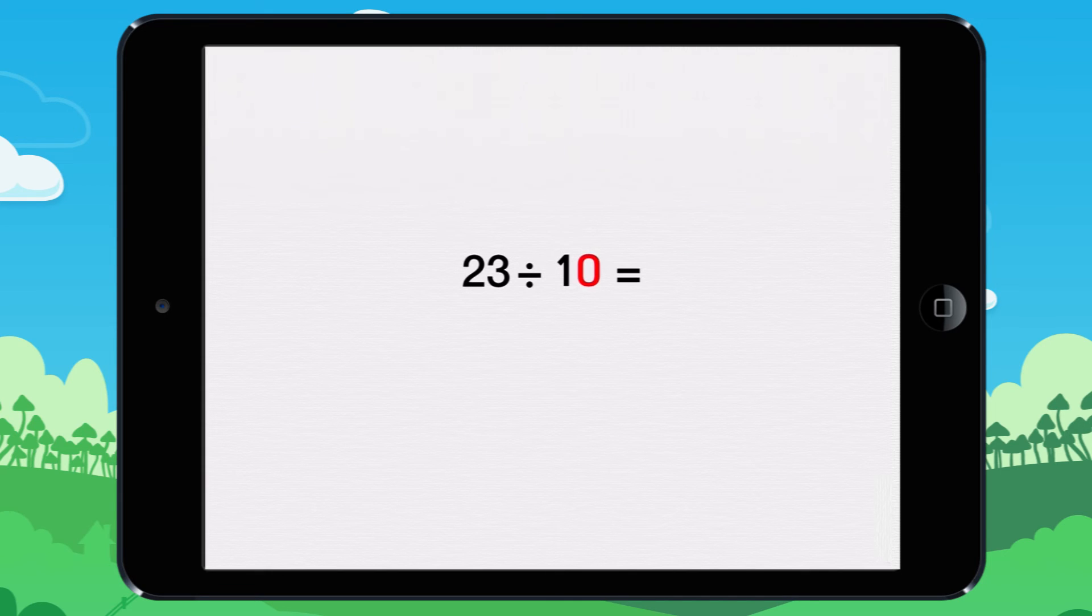To divide a number by 10, move the decimal point one digit to the left, because 10 only has one zero. 23 divided by 10 equals 2.3.